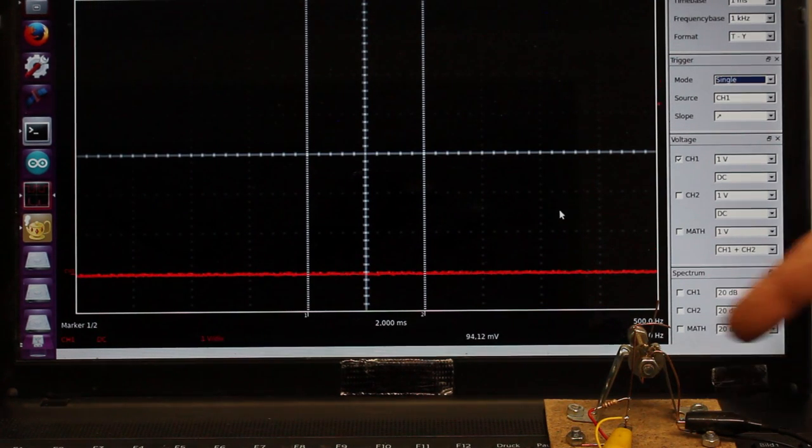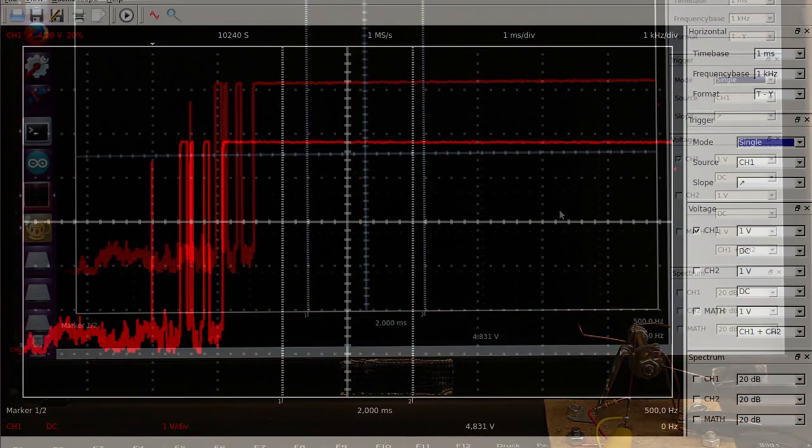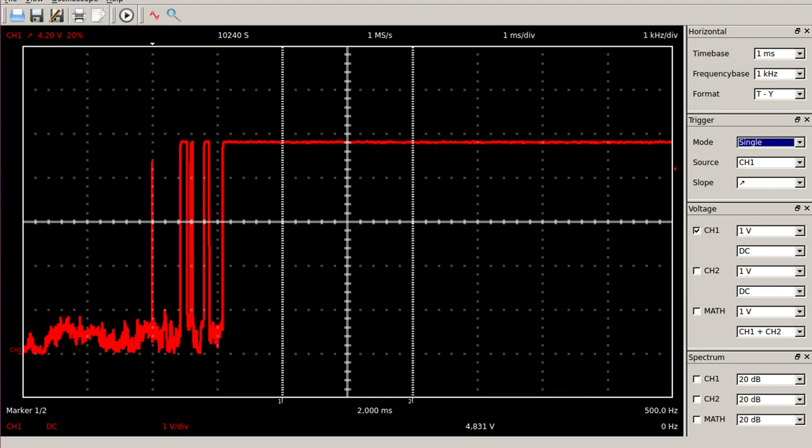Those spikes also appear whenever the switch is opened. Now the signal goes from 0 to 5V multiple times until we get a steady high signal. That common problem with nearly all electromechanical switches is called contact bounce.